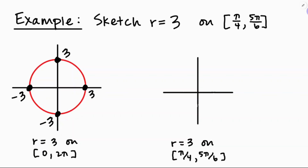But what if I wanted to graph this on a more limited domain — say theta between pi over 4 and 5 pi over 6? We just think about where pi over 4 and 5 pi over 6 are, restrict ourselves to that wedge, and see it's going to be the same circle, just only between those two blue lines. All of those places are still 3 units away from the origin.